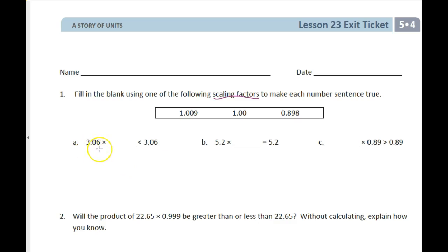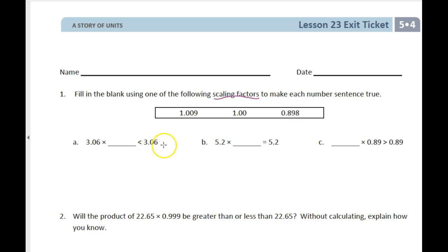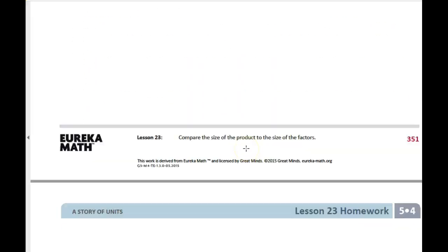What we're looking at today is actually with decimals. This is the homework part: if you have three and six hundredths, what can you multiply it by — out of these three choices — to get an answer that is smaller than three and six hundredths?